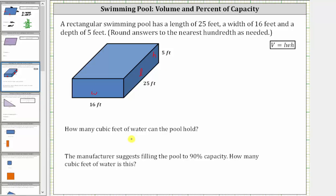To determine how many cubic feet of water the pool can hold, we need to determine the volume, which is equal to the length times the width times the height.